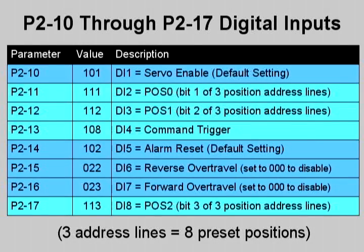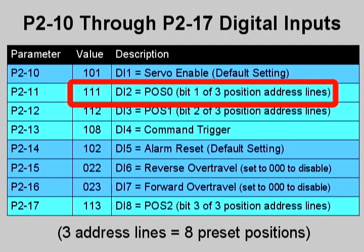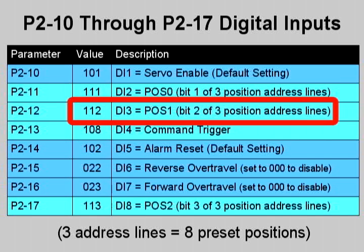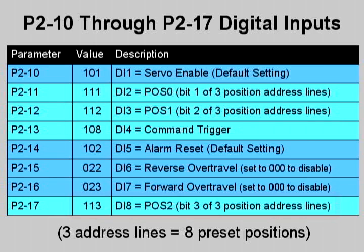Configuring the position selection inputs. The drive can be configured to select the internal position set points by using three digital inputs, POS0, POS1, and POS2. Any of the digital inputs can be set as POS0, that's code 11, POS1, that's code 12, or POS2, code 13. By configuring all three inputs, all of the eight internal presets can be selected via external signals.